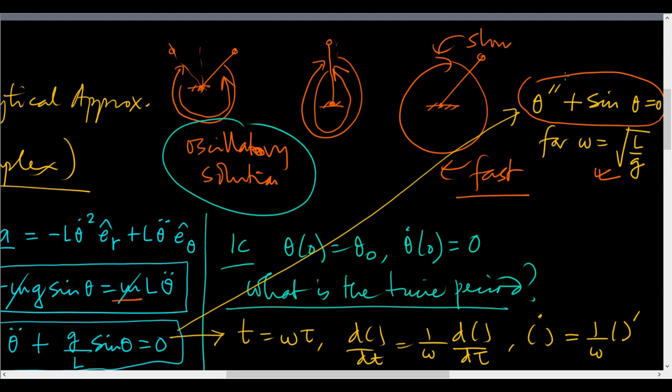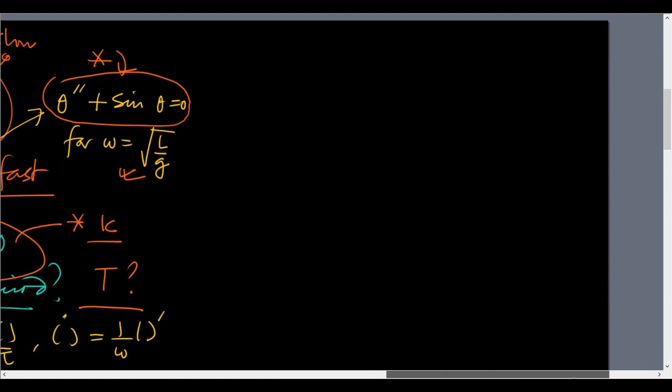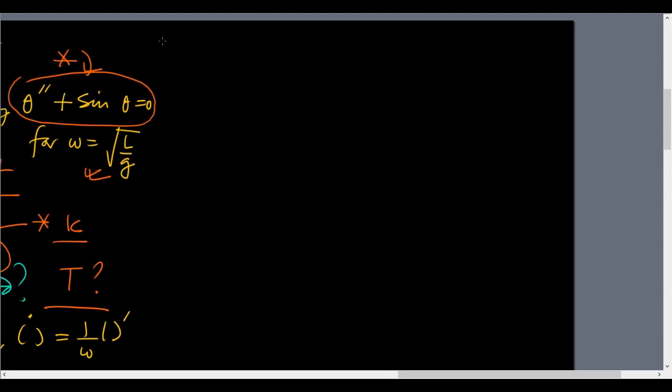So this problem with these initial conditions: what is the time period? If this time period is going to be in tau time, then we will multiply by omega to get the time period in original physical variables.